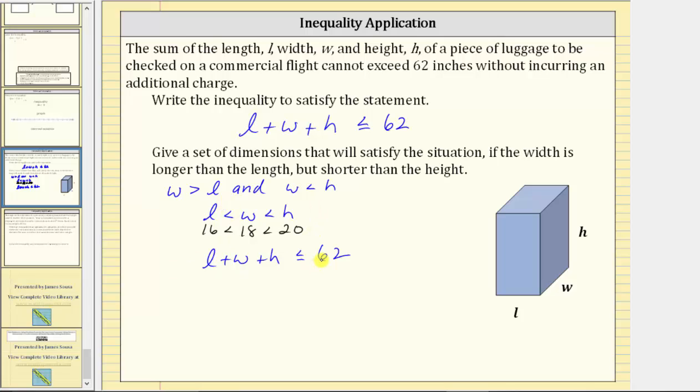Let's go ahead and check this in the second inequality. 16 plus 18 plus 20 less than or equal to 62. Well, 16 plus 18 is 34. 34 plus 20 is 54. 54 is less than or equal to 62, and therefore we did find one set of possible dimensions.